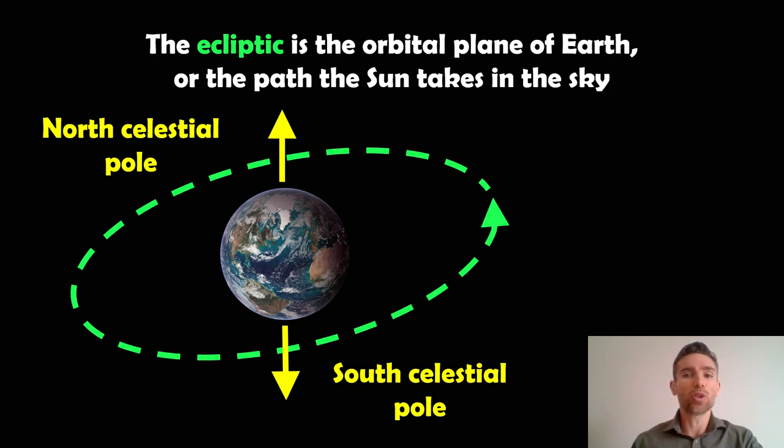Now the ecliptic is the orbital plane of Earth, or if we're actually on Earth looking at the movement of the Sun in the sky, that would be the path that the Sun would take in the sky. Because Earth is tilted, it's kind of offset from Earth's equator. The ecliptic is obviously offset from that; it has some angle which is relative to our tilt and a few other things as well.